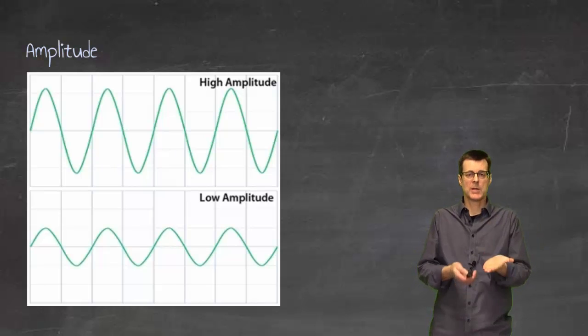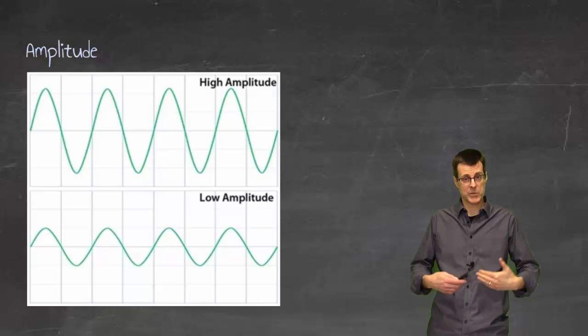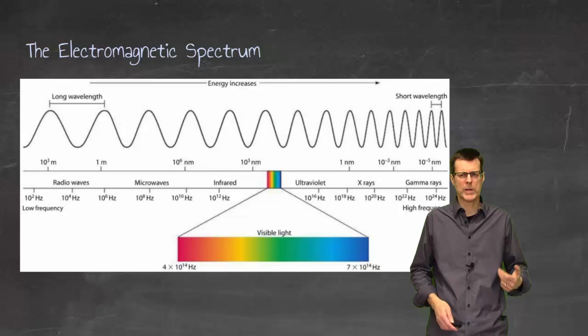Amplitude, we can have tall, we can have short, and again, as I mentioned, it's really just a matter of brightness when we're talking about light. But just so you know the two different ways that we can do that.